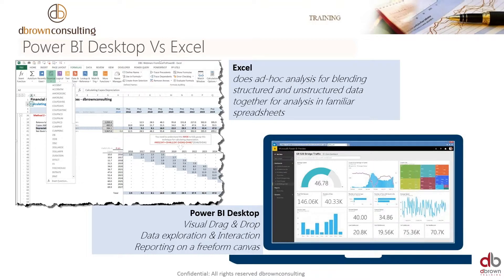If you look at this slide, we have Excel to the left. Excel does ad hoc analysis for blending structured and unstructured data together for analysis in familiar spreadsheets. Power BI, on the other hand, is a visual drag and drop — it does data exploration and interaction capabilities reporting on a free-form canvas. All we're doing is dragging and dropping into this free-form canvas, and we have all our reports.